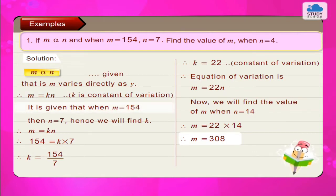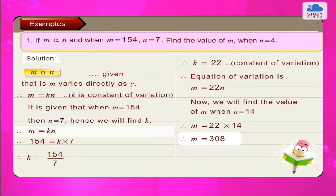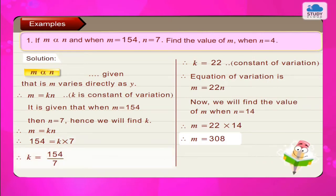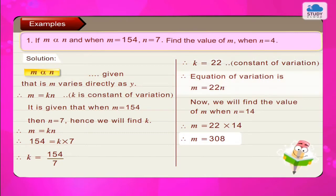It is given that when m = 154, then n = 7. Hence we will find k. m = k × n. Therefore 154 = k × 7. Therefore k = 154 upon 7. Therefore k = 22, which is the constant of variation. Therefore the equation of variation is m = 22n.